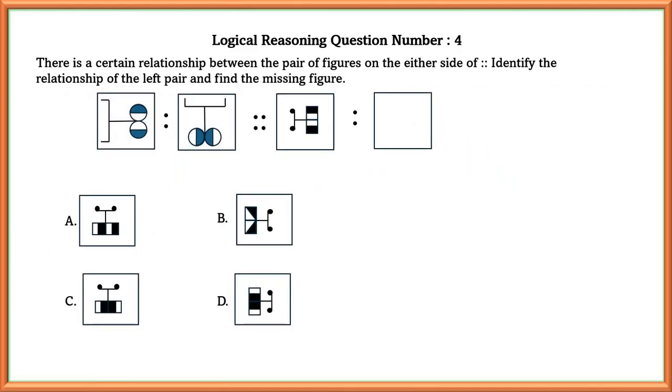Logical reasoning question number 4. There is a certain relationship between the pair of figures on either side of the dots. Identify the relationship of the left pair and find the missing figure. In the first relation, they have turned the image 90 degrees clockwise. So we are going to do the same with the second figure.